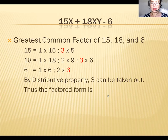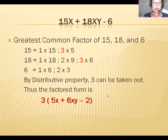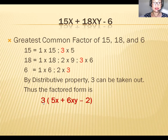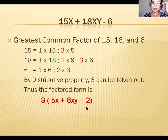By the distributive property, 3 can be taken out. From 15x + 18xy − 6, divide each term by the GCF: 15 divided by 3 is 5, copy the variable x; 18 divided by 3 is 6, copy the variable xy; and 6 divided by 3 is negative 2, since 6 is negative.